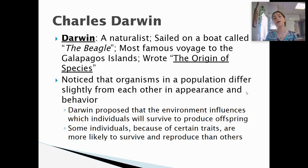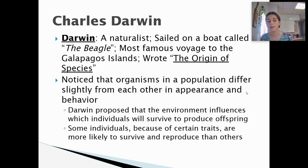Darwin noticed that organisms in a population differ slightly from each other in appearance and behavior. He proposed that the environment influences which individual will survive to produce offspring. He said some individuals, because of certain traits, are more likely to survive and reproduce than others — and he is the one who came up with these ideas.